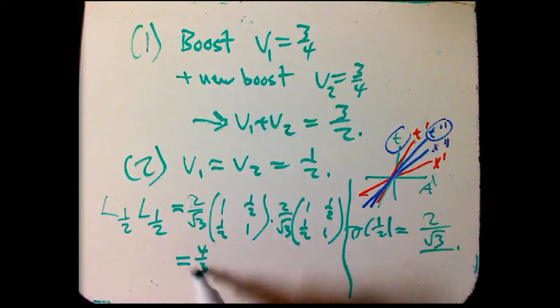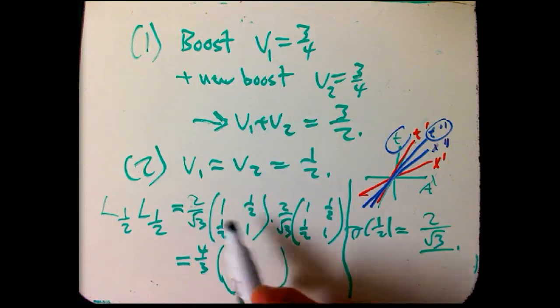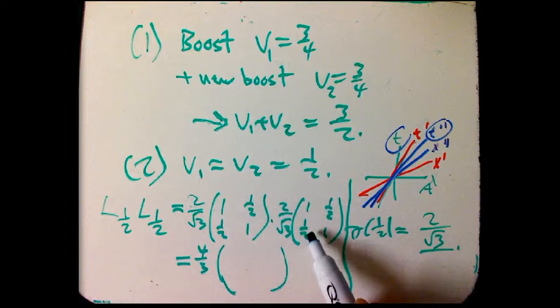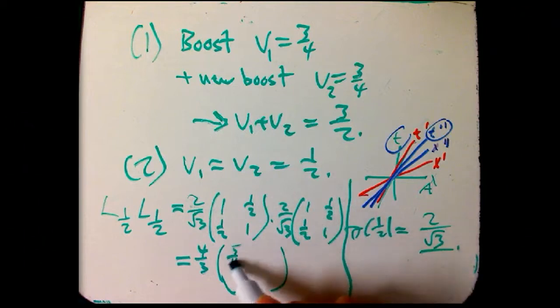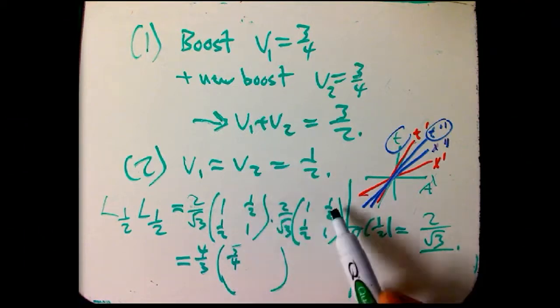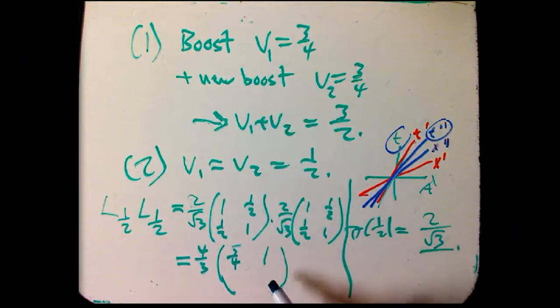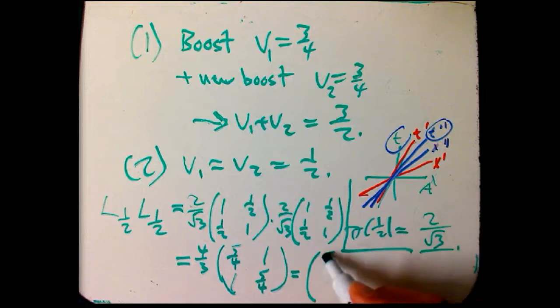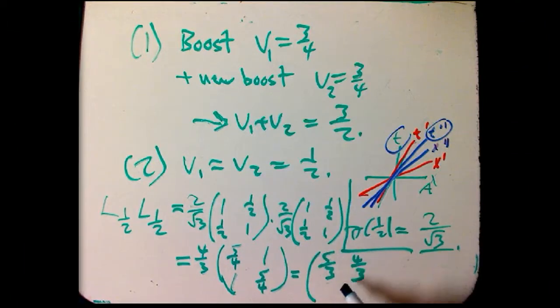So we're going to get four thirds from the scalars multiplying together. And then 1 times 1, a half plus a half, that's going to be 5 fourths. And then 1 times 1 half, a half times, that's 1. And then 1, and then 5 fourths. And then all in all, if you bring in the 4 thirds, it's 5 thirds, 4 thirds, 4 thirds, 5 thirds.